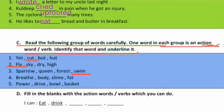Next set is: breathe, body, slime, and fat. 'Breathe' matlab hota hai saans lena. 'Body' matlab sharir, 'slime' matlab keechad, aur 'fat' matlab mota. To yeh tino — body, slime, fat — verbs nahi hain. Verb kya hai? Kaam kya ho raha hai — saans lene ka. Halanki breathing to ek natural process hai, lekin it is an action word — 'breathe'.